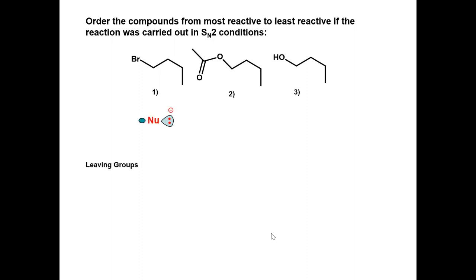In the first reaction, the bromide ion is the leaving group. In the second reaction, the acetate ion is the leaving group. In the third reaction, the hydroxide ion is the leaving group.